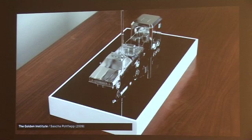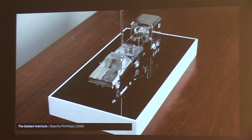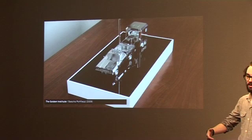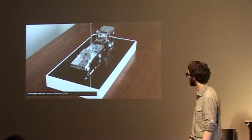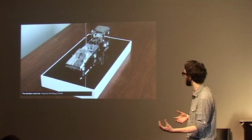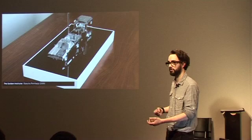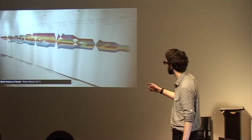Counterfactual histories work too. This is a great project by Sascha Pohflepp called the Golden Institute, where he looked at an alternative version of history where Carter beat Reagan in the 1980 US election and invested in environmental policies that would still play into the American way of life. For instance, this car drives along the middle of the desert picking up lightning bolts from the sky and storing them as energy. It's a way of looking back and saying: what if things had been different? What might that have looked like? What sort of objects might have come out of that change?